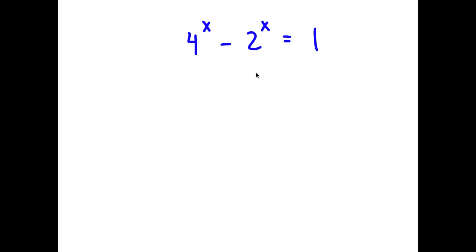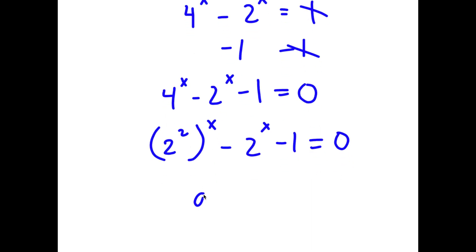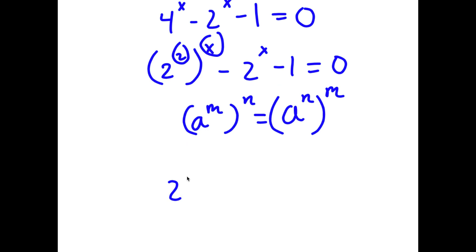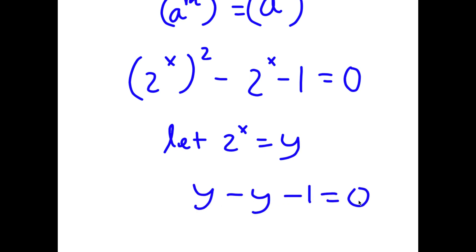In this problem, I have 4 to the power of x minus 2 to the power of x equals 1. To solve this, I'll subtract 1 from both sides so that 4 to the power of x minus 2 to the power of x minus 1 equals 0. I'll rewrite 4 to the power of x as 2 to the power of 2 to the power of x, and switching the exponents gives 2 to the power of x to the power of 2. So I have 2 to the power of x squared minus 2 to the power of x minus 1 equals 0. I'm going to let 2 to the power of x equal y, so now I have y squared minus y minus 1 equals 0.